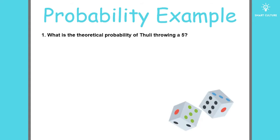What is the theoretical probability of Tudu throwing a 5? So how can we go about answering this question? We have to use the formula for theoretical probability. So it will be the number of favorable outcomes divided by the total number of possible outcomes. So the number of favorable outcomes is only 1 because it's 5. We want to know what is the probability of Tudu throwing a 5, so it's only one favorable outcome.